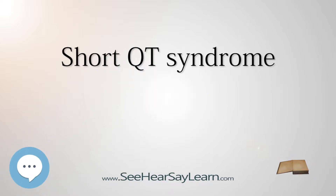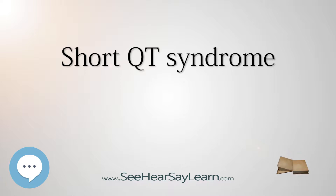Short QT syndrome is a genetic disease of the electrical system of the heart. It consists of a constellation of signs and symptoms including a short QT interval on an EKG less than or equal to 300 milliseconds that does not significantly change with heart rate, tall and peaked T waves, and a structurally normal heart. Short QT syndrome appears to be inherited in an autosomal dominant pattern, and a few affected families have been identified.